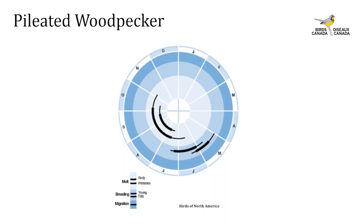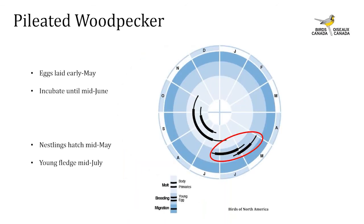This annual cycle graphic shows the breeding period for pileated woodpeckers. The outer dark blue circle shows migration periods — there's no migratory period for pileated woodpeckers, they're a non-migratory species that stays all winter. The center blue circle shows the breeding period with two black bars indicating egg-laying and young stages. The outer black bar — egg laying and incubation — begins in early May and goes to mid-June, with the peak from mid-May to early June.